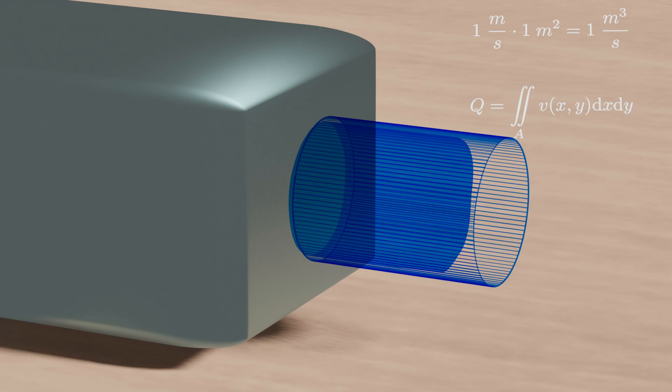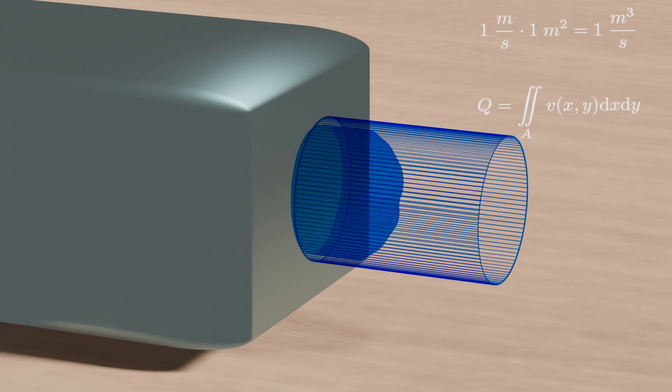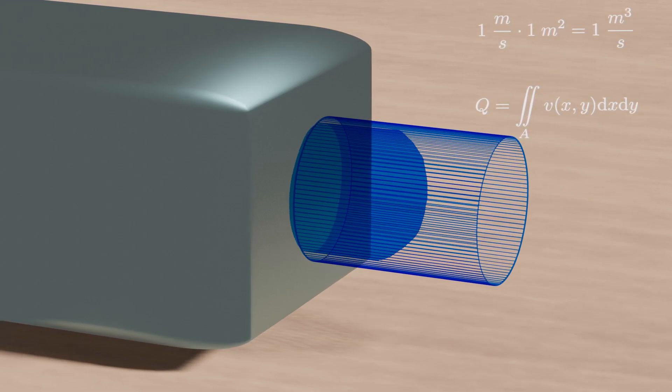But here is what I call a more realistic case. So how to determine the flow in this case? I'm pretty sure that you already know the answer. And it goes like this.